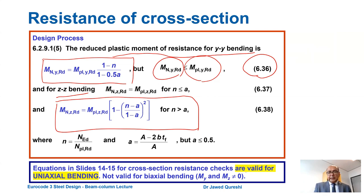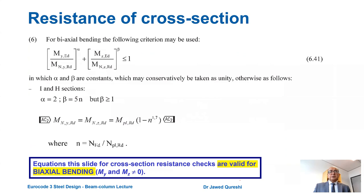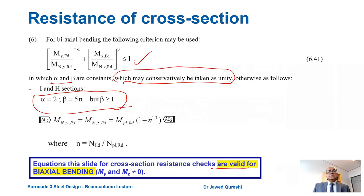These equations are only valid for uniaxial bending — when bending is happening in the plane under consideration — and are not valid for biaxial bending when both major axis and minor axis moments are non-zero. When bending is happening in two directions, we use a separate biaxial bending equation. Alpha and beta have specific values, but for simplicity they can conservatively be taken as unity to calculate the reduced bending moments.